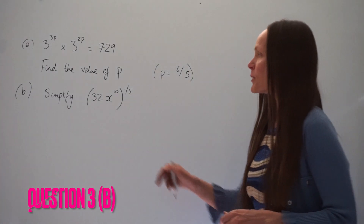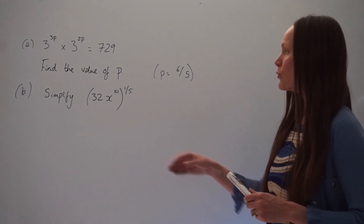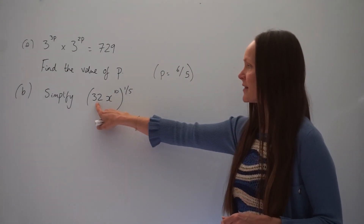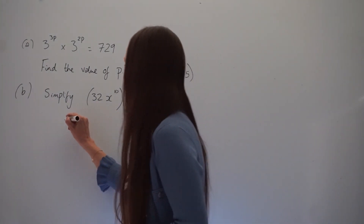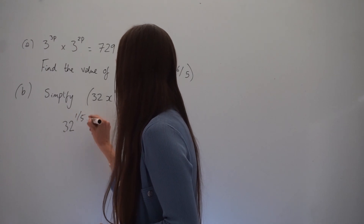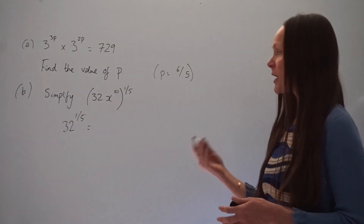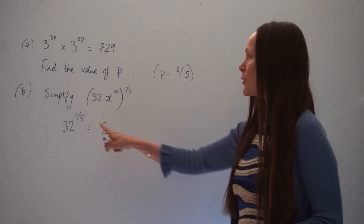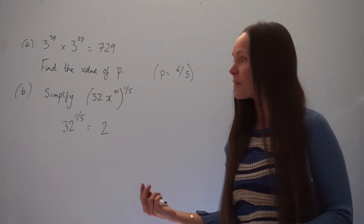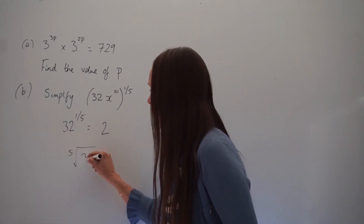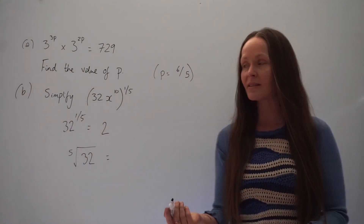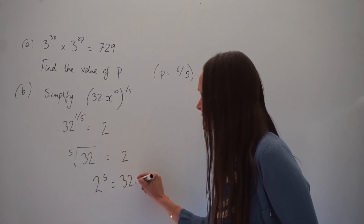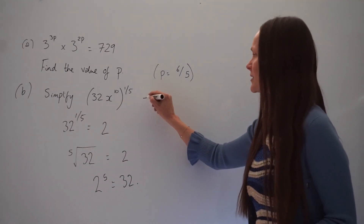In part B, we have to simplify 32x to the power of 10, all raised to the power of 1 fifth. Start by working out what happens to the number 32 — raise it to the power of 1 fifth. Anything raised to the power of 1 fifth is the same as finding the fifth root. The fifth root of 32 is 2, because 2 to the power of 5 equals 32.